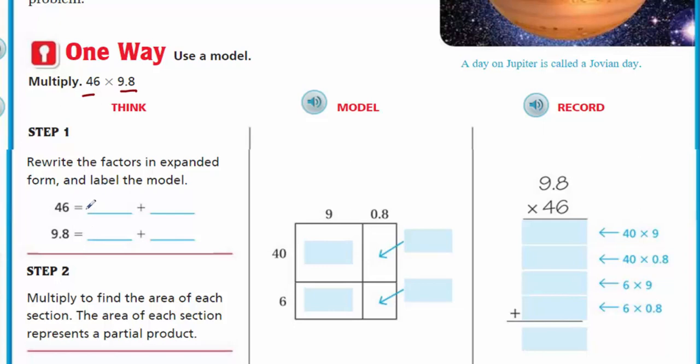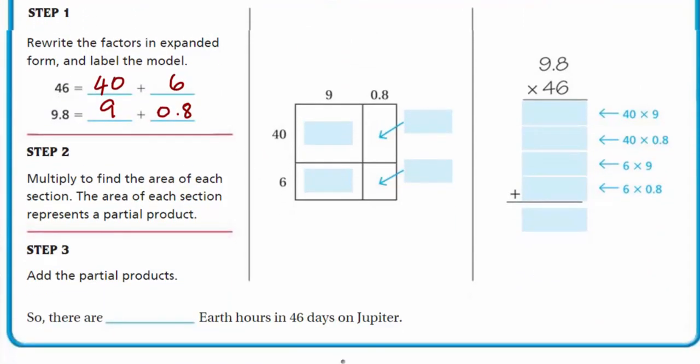Step one comes before step two. Rewrite the factors in expanded form and label the model. When I think of expanded form, expanded is like to stretch it out. So 46 is really just 40 plus 6. Now here we have a decimal. We have 9 plus 0.8. We'll put the zero in front to avoid any confusion.